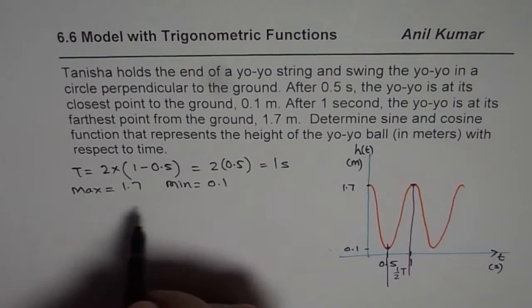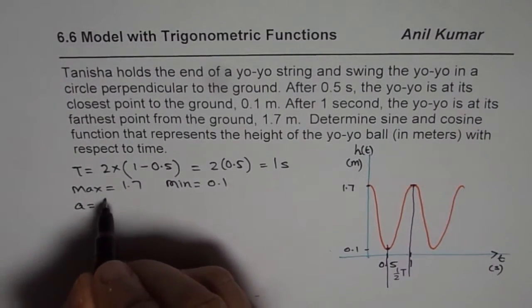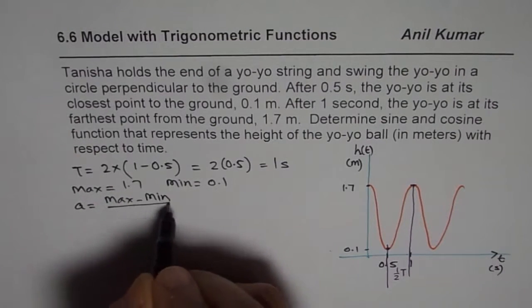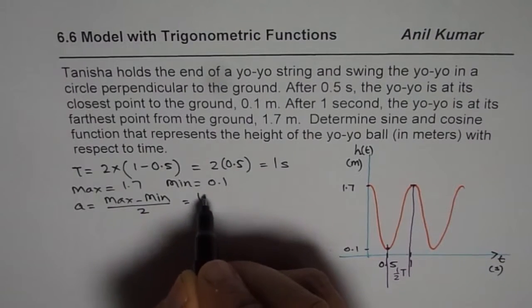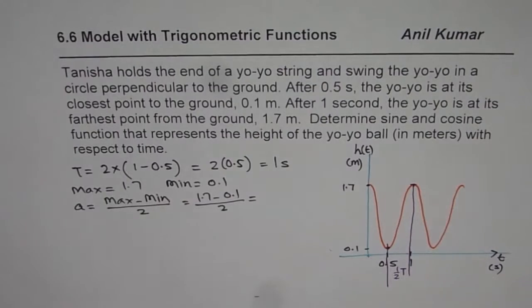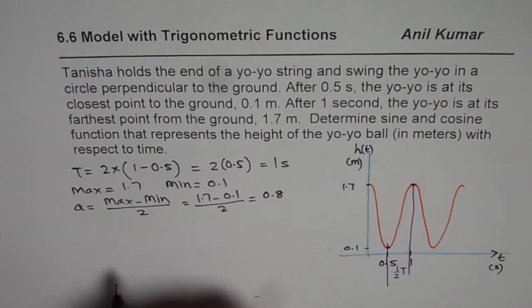we can always find the amplitude, which is maximum minus minimum divided by 2 or 1.7 minus 0.1 divided by 2 and which is 0.8. 0.8.